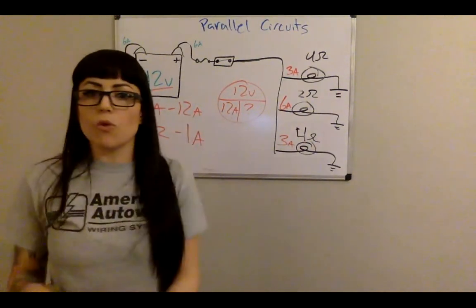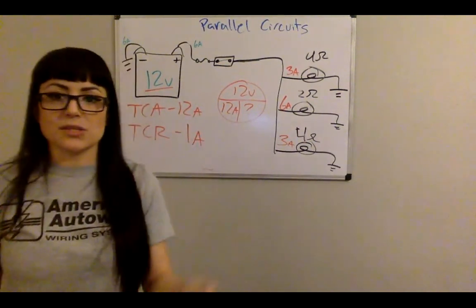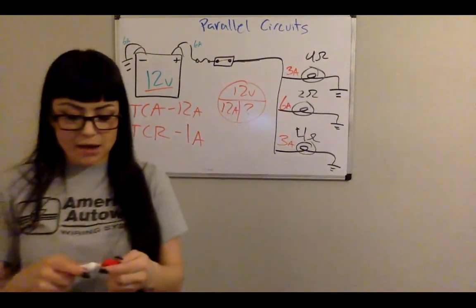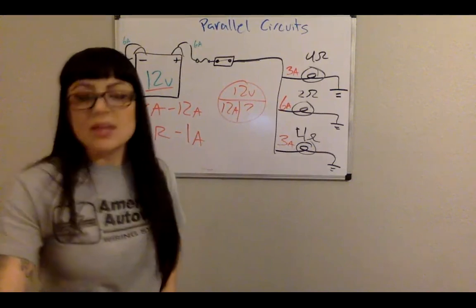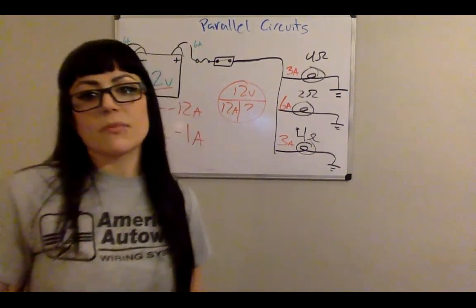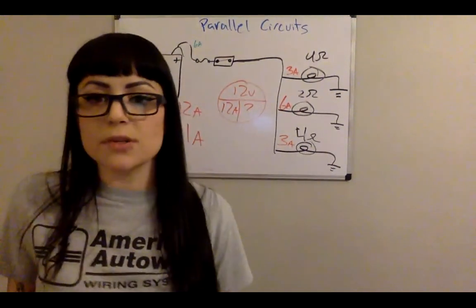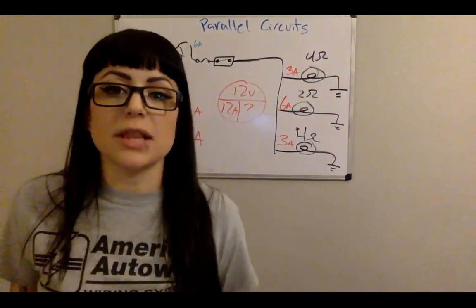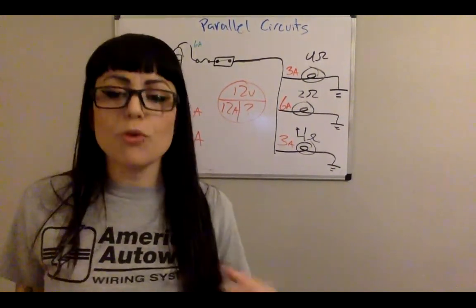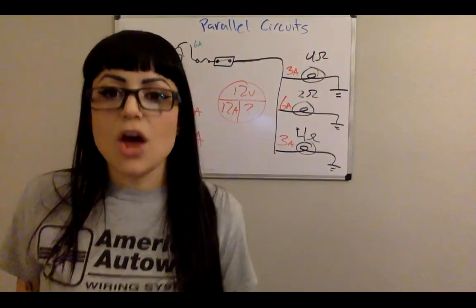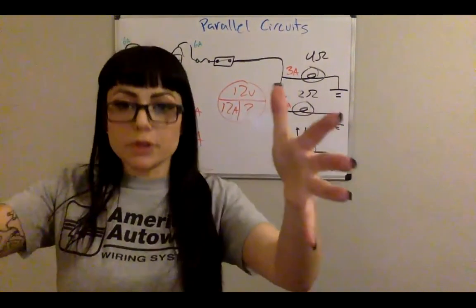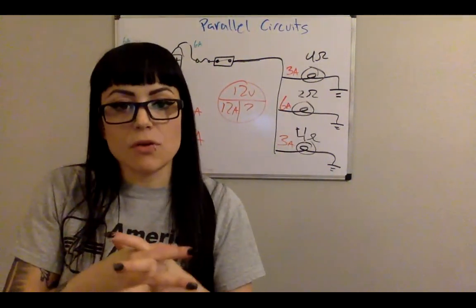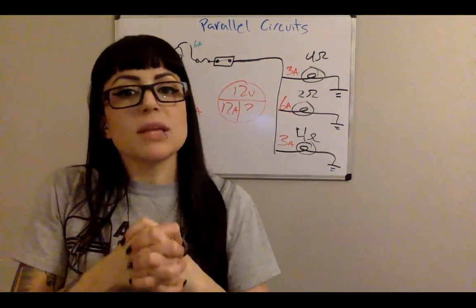Notice that the more branches we add, the less resistance we have for TCR. That's not an accident — parallel circuits are like a freeway. The more lanes we have, the more room there is for flow. The fewer lanes, the more restriction. More branches equals more current flow, less total resistance.